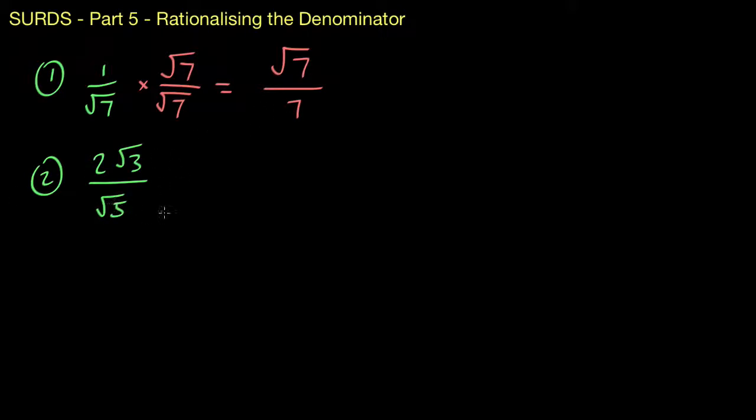For this question here, we're trying to get rid of the square root of 5. So you can probably already think what we're going to be multiplying this whole thing by. We're just going to multiply it by the square root of 5 over the square root of 5. So straight away, we know that on the bottom here, we're going to get the number 5. On the top though, you've still got to keep moving forward with this multiplication. You're going to get the coefficient of 2 will stay there, and then root 3 times root 5 will give you root 15.